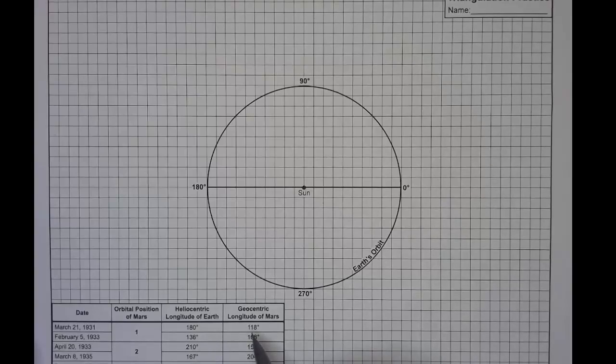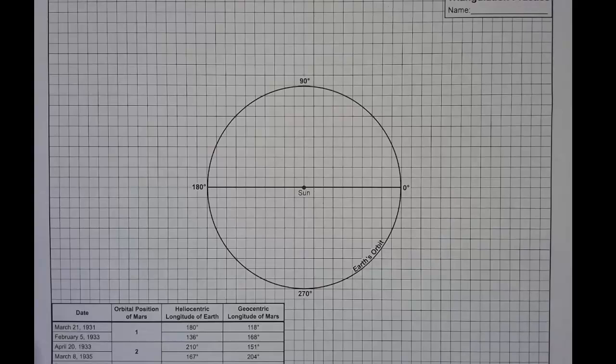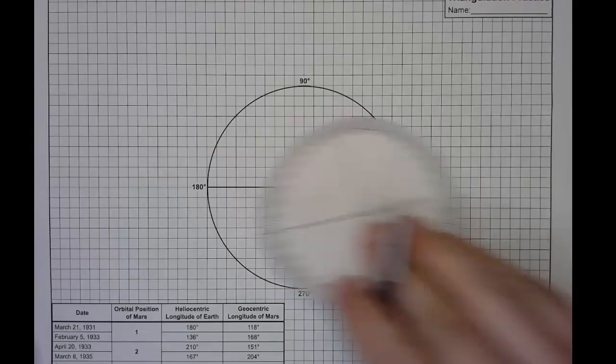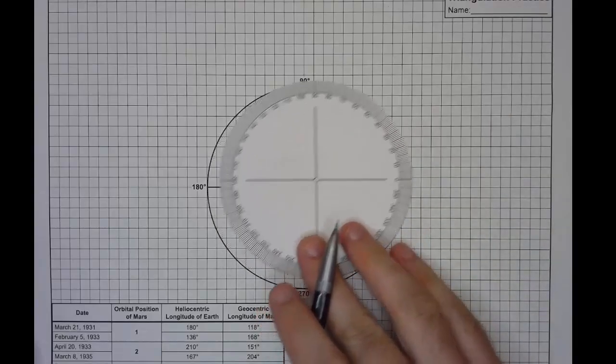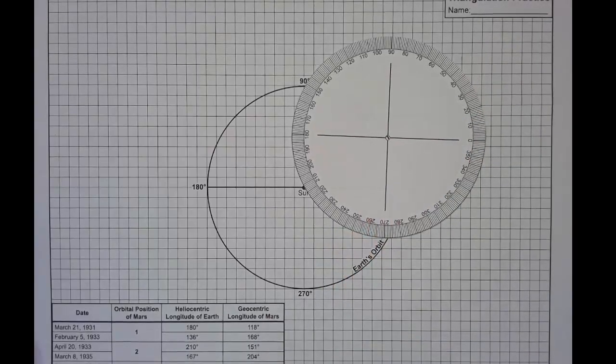And then there's a geocentric longitude of Mars. So geocentric, meaning Earth-centered. Once we have a position plotted on the orbit, we'll change the center from the Sun to our Earth position, and then measure an angle from there. That's how we get the geocentric longitude of Mars.